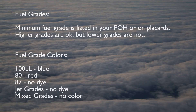Many airports offer 87 octane aviation fuel, which is not dyed and has the appearance of automotive gasoline. Jet fuel is also not dyed. Finally, if multiple grades of fuel are mixed inside the fuel tank, the dyes can interact to produce no color.